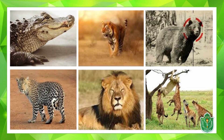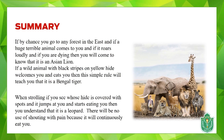If you encounter another ferocious animal with black stripes on yellow hide that comes towards you to eat you up, you should immediately recognize it is a Bengal tiger coming very fast toward you. If you are strolling and see an animal whose hide is covered with spots that jumps very swiftly toward you, you should immediately know it's a leopard. If the leopard comes toward you, it's so fast and dangerous that even if you shout with pain, it's going to eat you up.